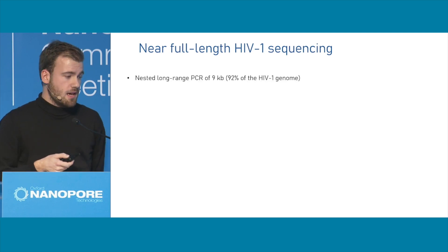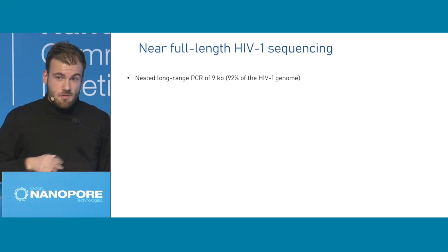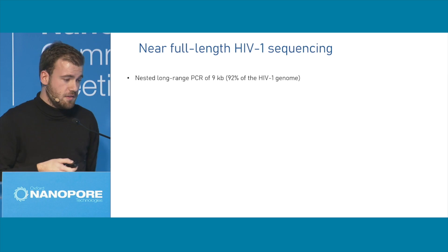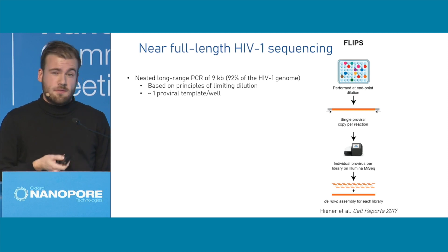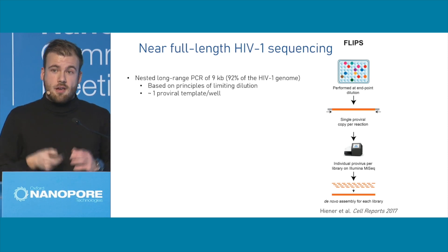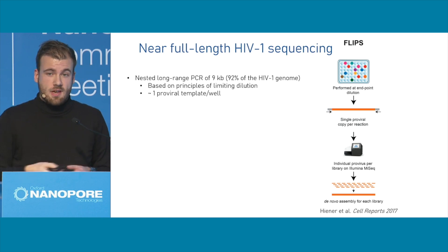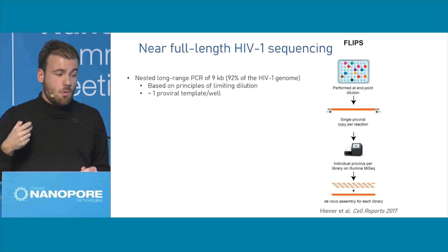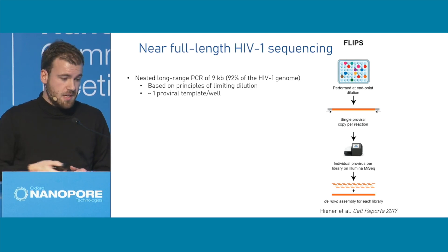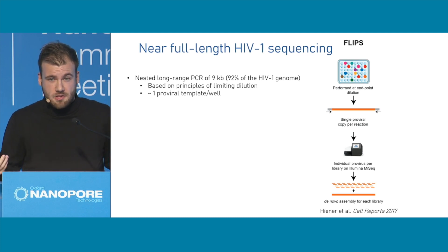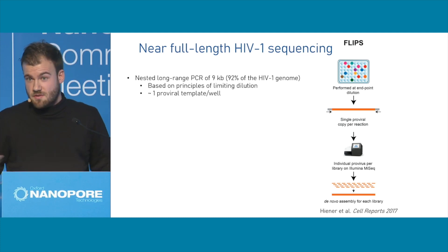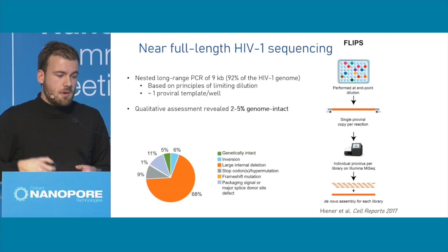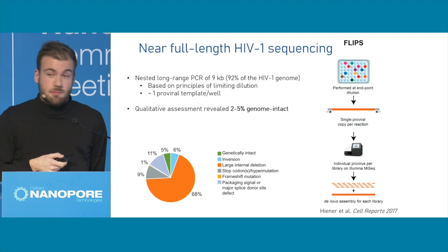If you want to sequence those HIV inserts, we use a nested PCR of around 9 KB, which is approximately the length of HIV, and we target with the primers around 92%. Currently, we do it based on the principles of limiting dilution, where you take your DNA and dilute it. On a 96-well plate, around 30% or less of your reactions should be positive, to ensure that you have one single copy in a well if you have a positive band on your gel. You do your nested PCR, visualize on a gel, and then select your amplicons for sequencing, most of the time through Illumina.